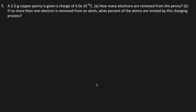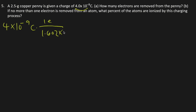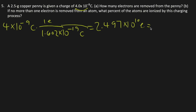A copper penny is given a charge of positive 4 times 10 to the negative 9th coulombs. How many electrons are removed from the penny? Convert the charge to total number of electrons: 4 times 10 to the negative 9th coulombs times 1 electron over 1.602 times 10 to the negative 19th power coulombs, which equals 2.496 times 10 to the 10th power electrons, approximately 2.5 times 10 to the 10th power electrons.